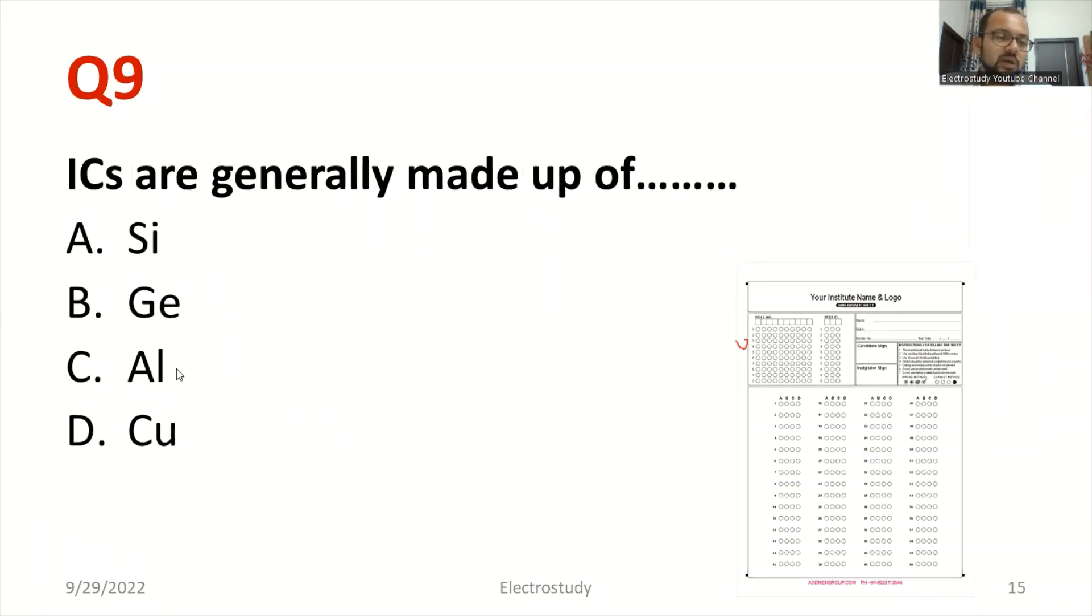Moving on to question number nine. Integrated circuits are generally made up of, the right answer is silicon. Integrated ICs. Can you tell me some examples of ICs? LM471 is one of the examples. Likewise, you can say different types of ICs.